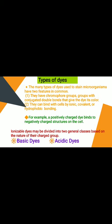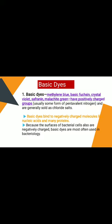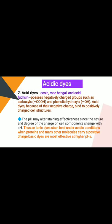Ionizable dyes are divided into two general classes based on the nature of their charge group: basic dyes and acidic dyes. Basic dyes — examples include methylene blue, basic fuchsin, crystal violet, safranin, and malachite green — have a positively charged group, usually pentavalent nitrogen, and are generally sold as chloride salts. Because they are positively charged, basic dyes bind to negatively charged molecules like nucleic acids and many proteins. Since DNA is negatively charged and the surface of bacterial cells is also negatively charged, basic dyes are most often used in bacteriology.